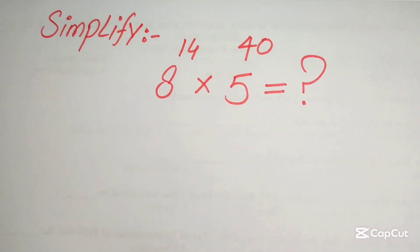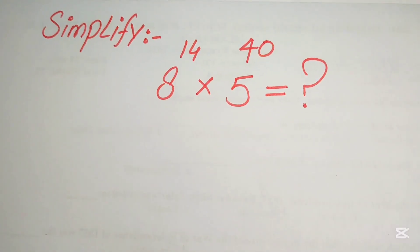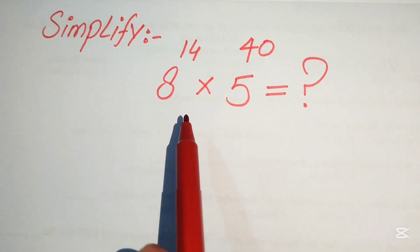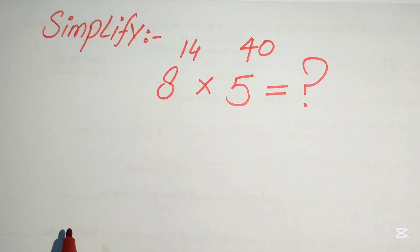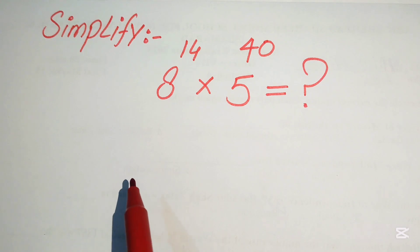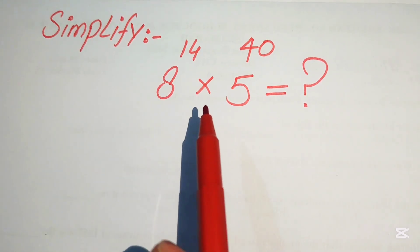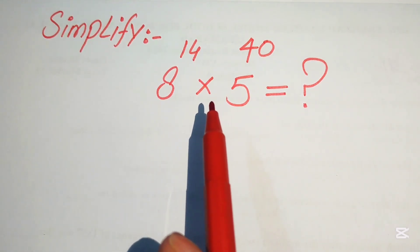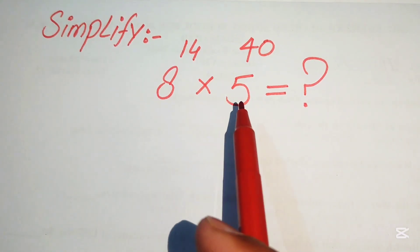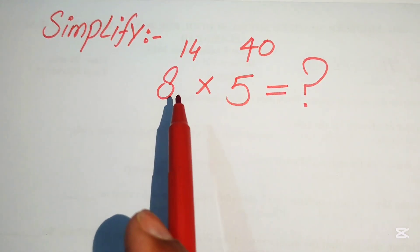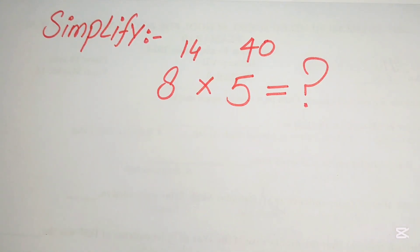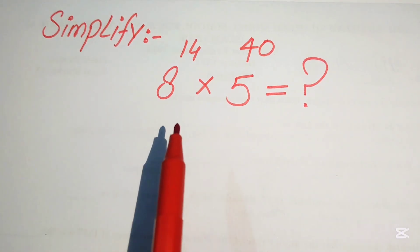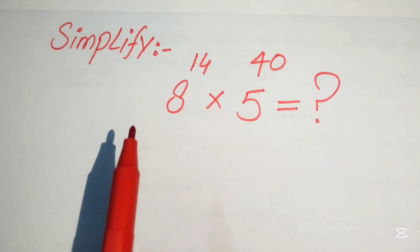Hello everyone. How to simplify this nice algebraic expression: 8 to the power of 14 multiplied by 5 to the power of 40. We want to write this in simplified form. Here we cannot just multiply different bases with different exponents, so we see that the bases on both numbers are different and the exponents are also different. We need some working to convert this into a form where we can apply an exponent rule.